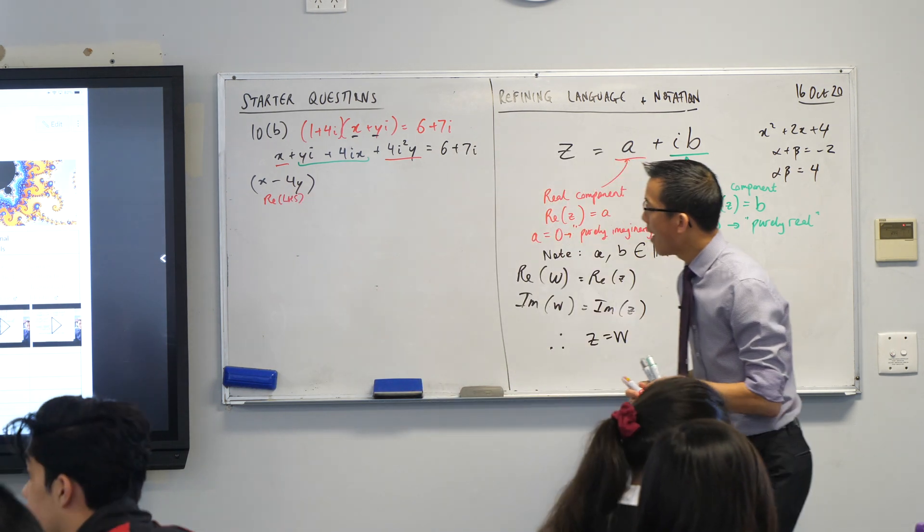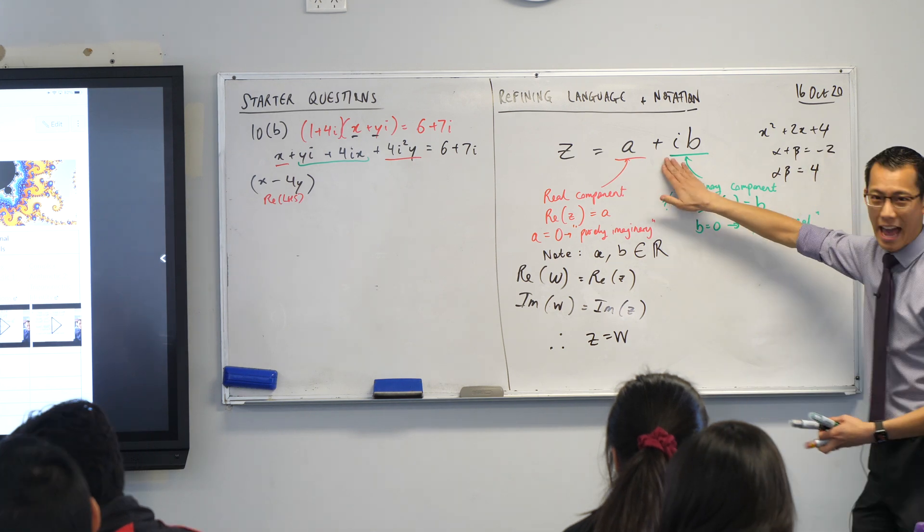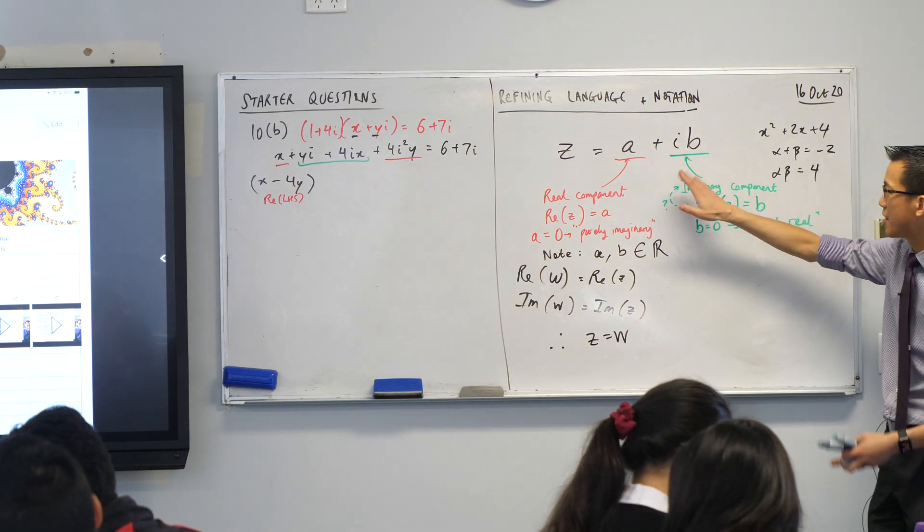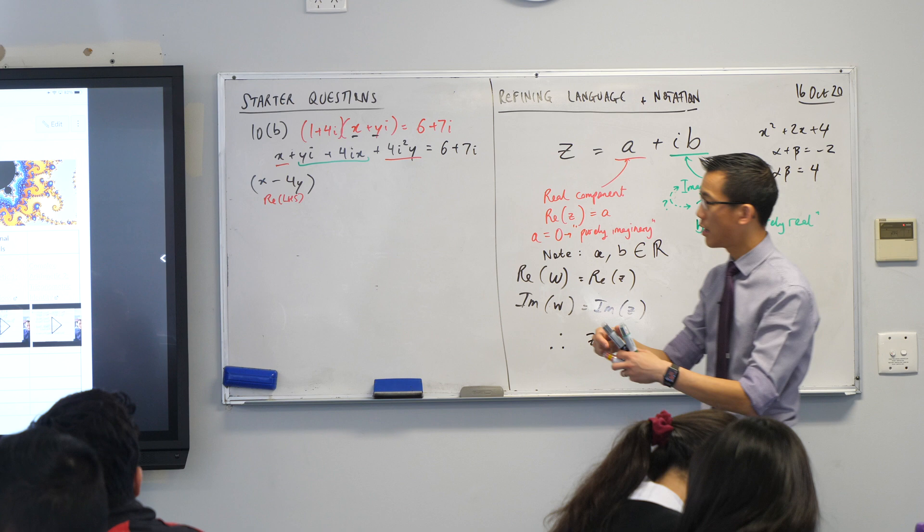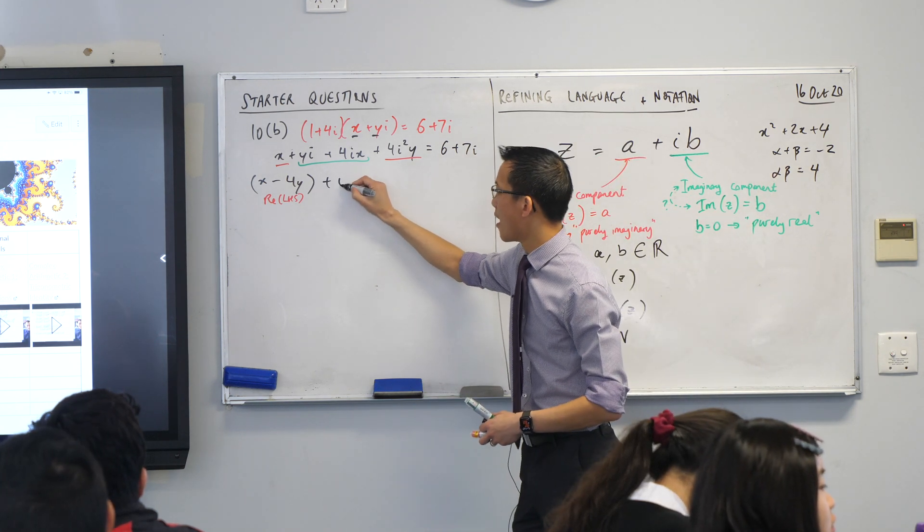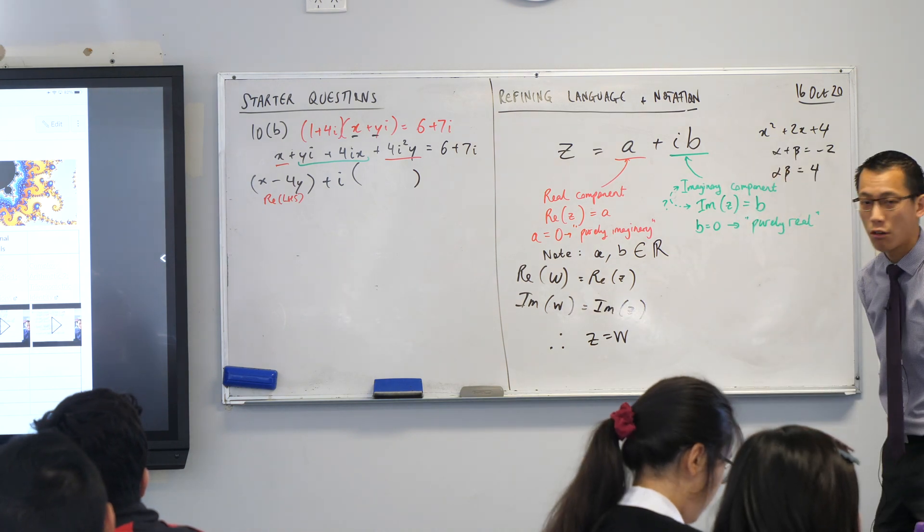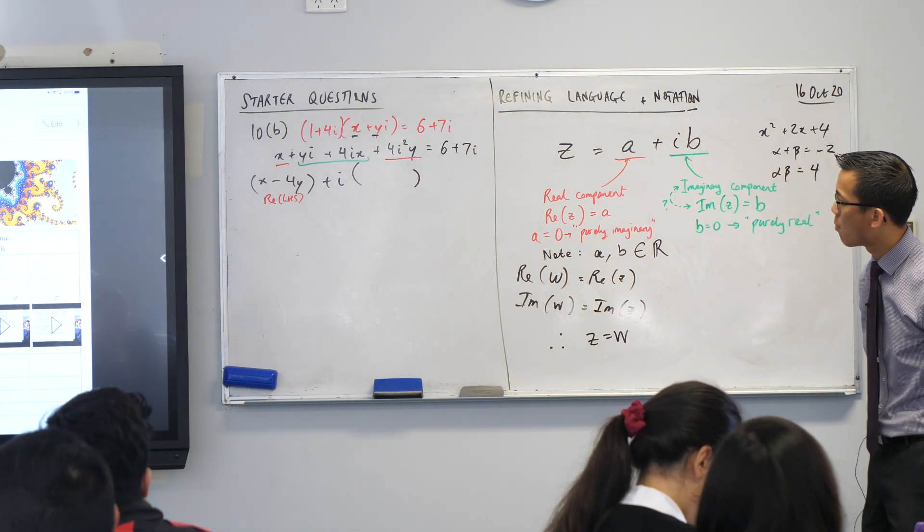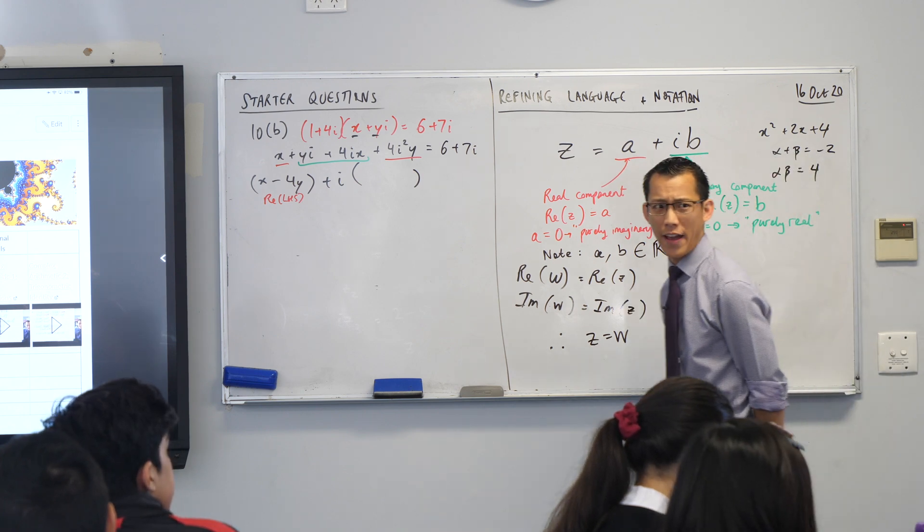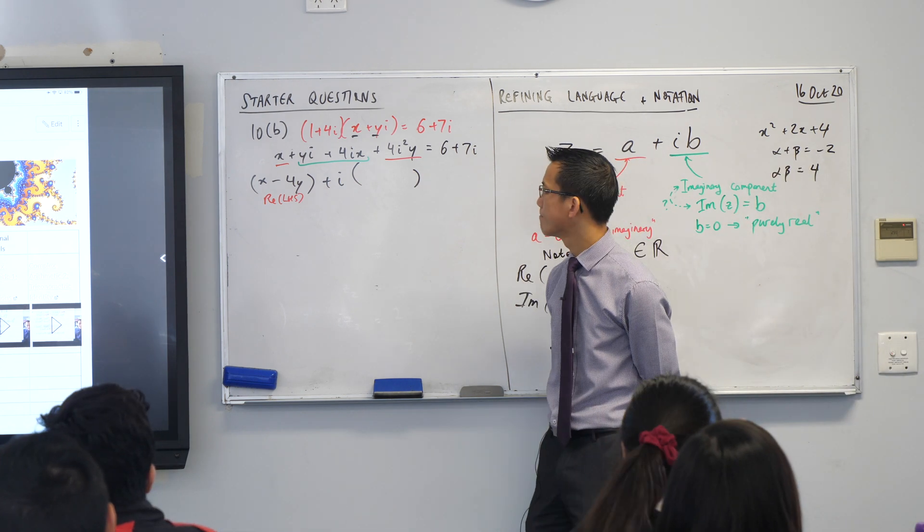In fact, I will highlight it for us just by even writing. This is the real component of the left-hand side. And then, just like I have been here, I'm trying to highlight the fact that there's an imaginary component over here. So I'm going to say plus i, and then here comes the b. So, what do I put into here? Have a think. I'm factoring out i.